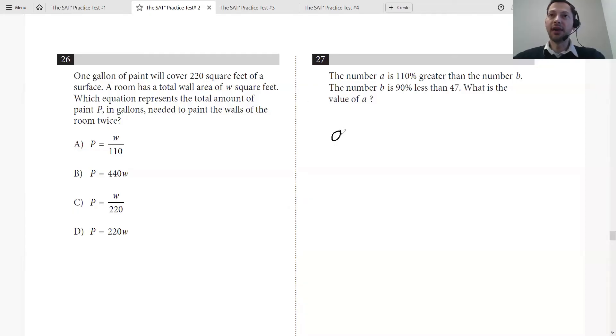Let's write that down. The number A is 110% greater, so A equals 2.10 times B. Remember, 100% is 2, and 10% is 0.10, so 2.10 times B.